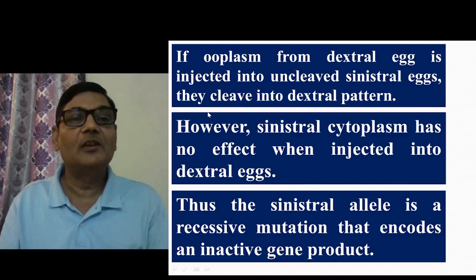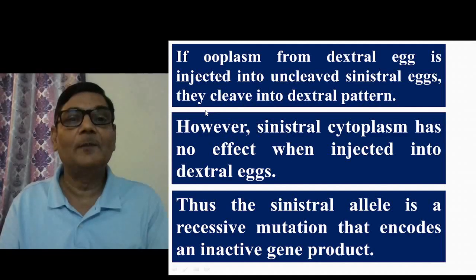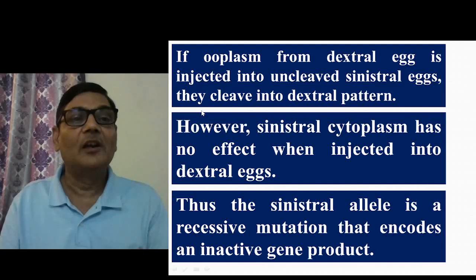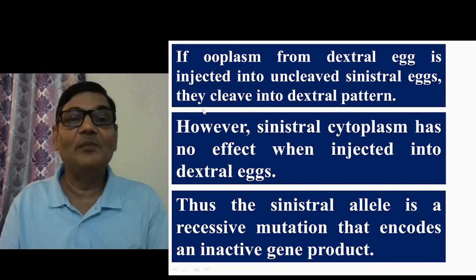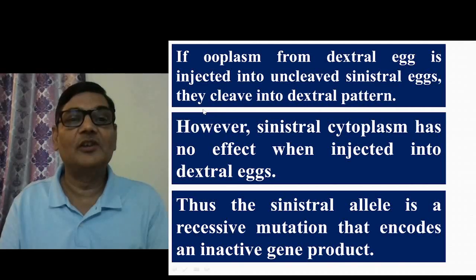With this information, you should be able to understand what determines the coiling pattern of dextral and sinistral shells in case of Limnea perigra — this is the species in which this aspect of cytoplasmic inheritance has been studied in much detail.